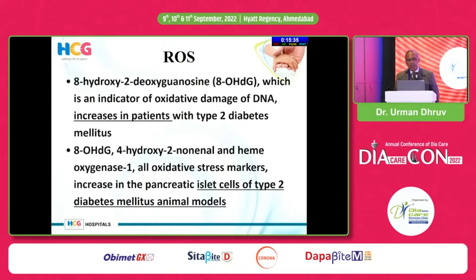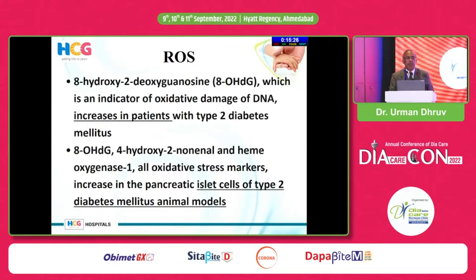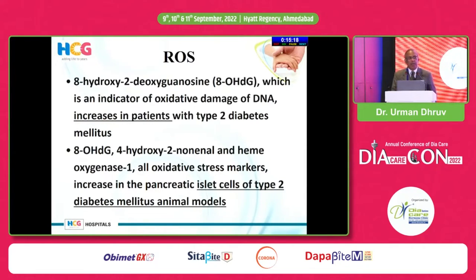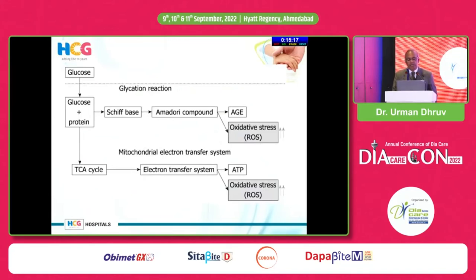8-OH-DG is an indicator of oxidative damage to DNA, and that is the reason it increases during type 2 diabetes. So we now recognize oxidative stress with multiple biomarkers including ROS.